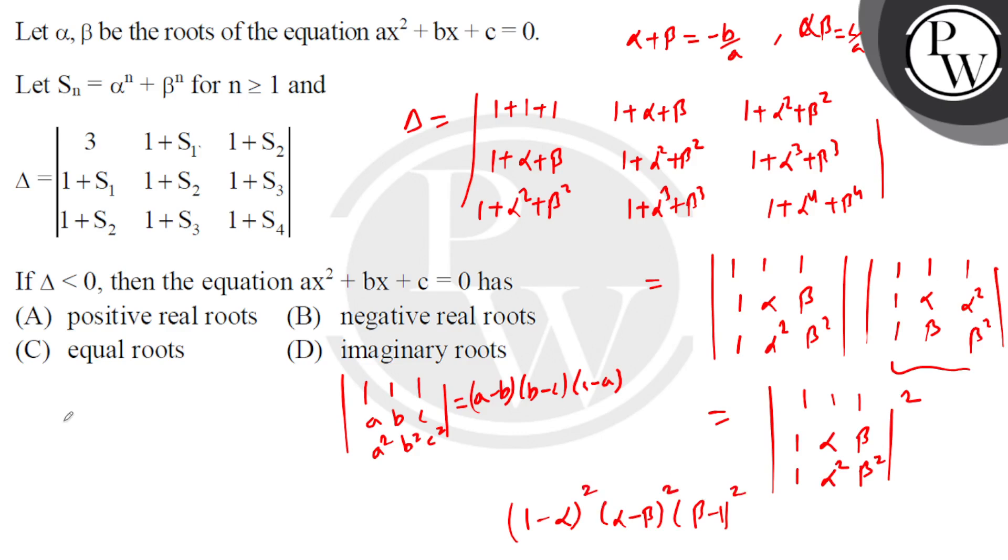Now if we look here, we have delta which is less than zero. But delta as we got it is always positive because it's a square.